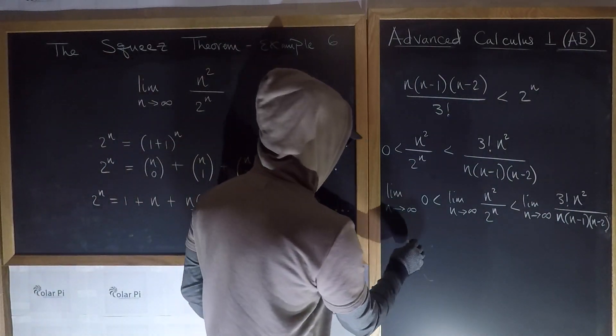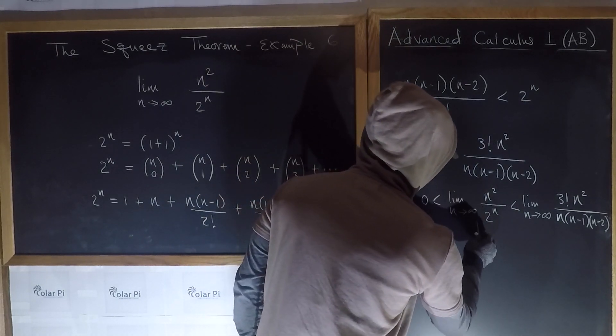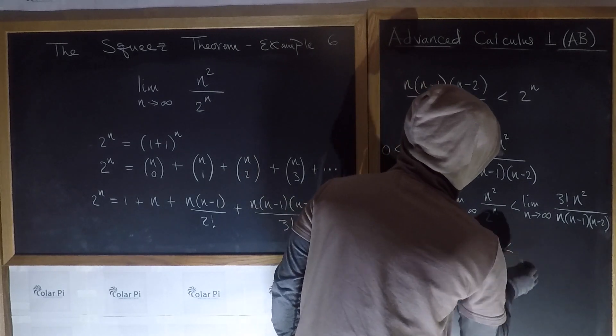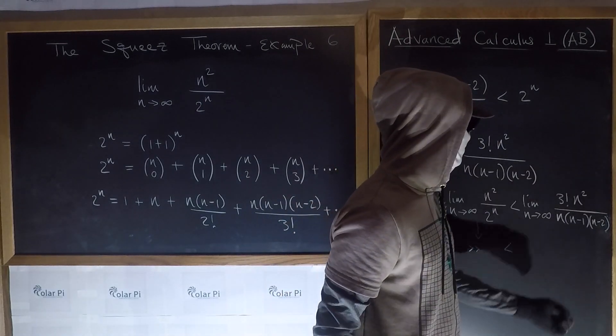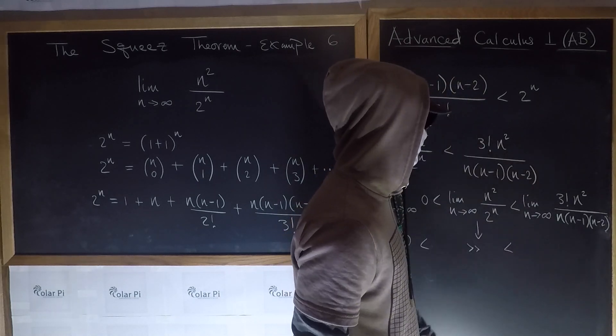I don't like that. Sorry, guys. Sorry for being annoying. n minus 2. All right? Okay, cool. Well, this is 0. So 0 is less than our desired limit, which is less than, well, clearly we have an n squared on top here, but the denominator will have an n cubed,